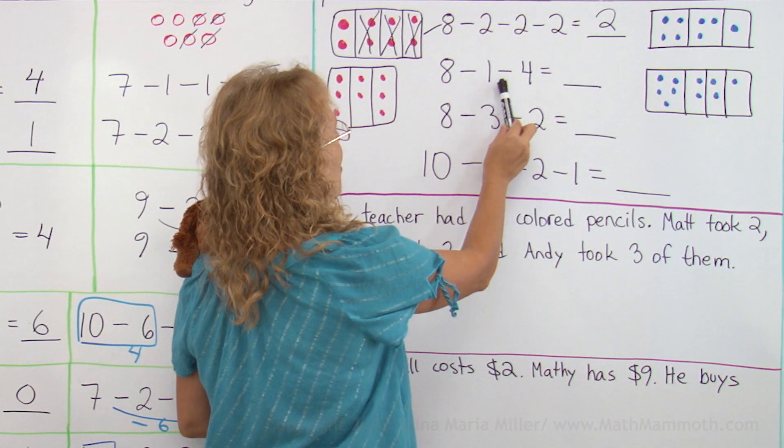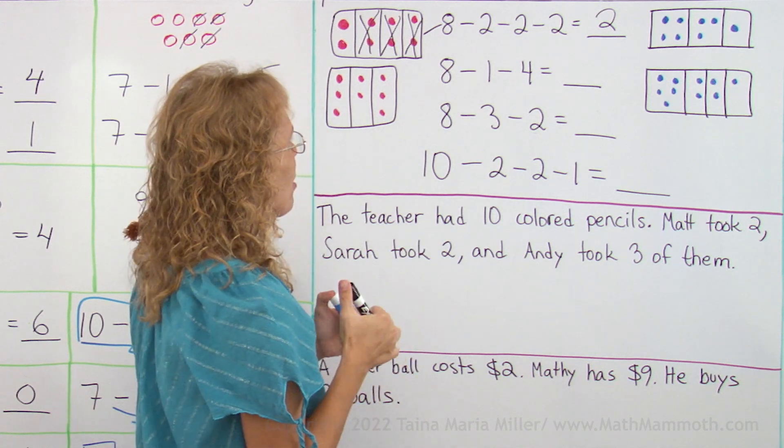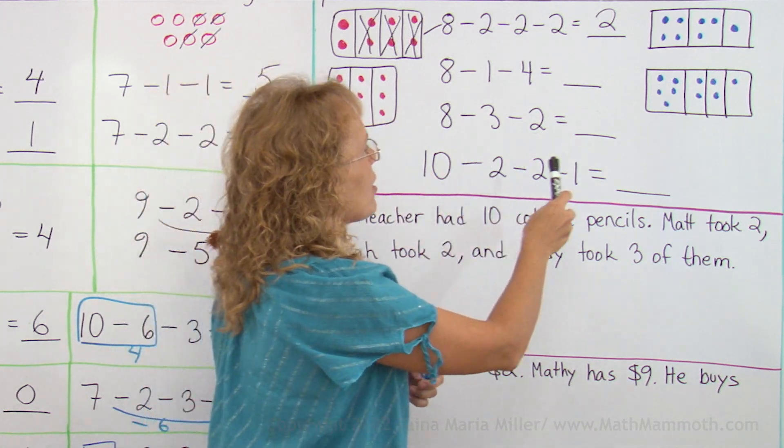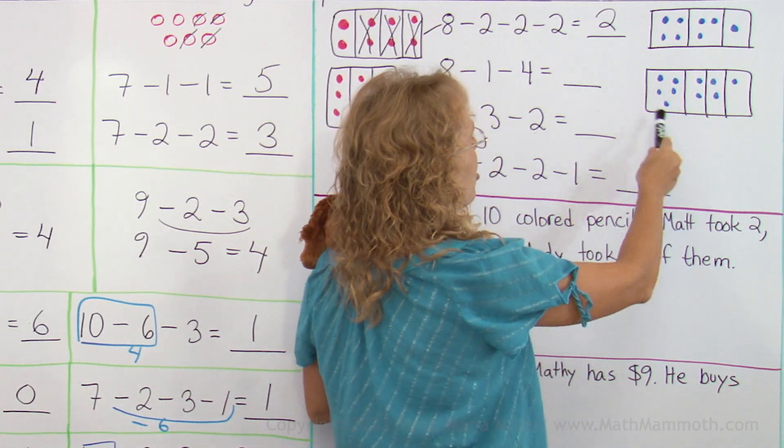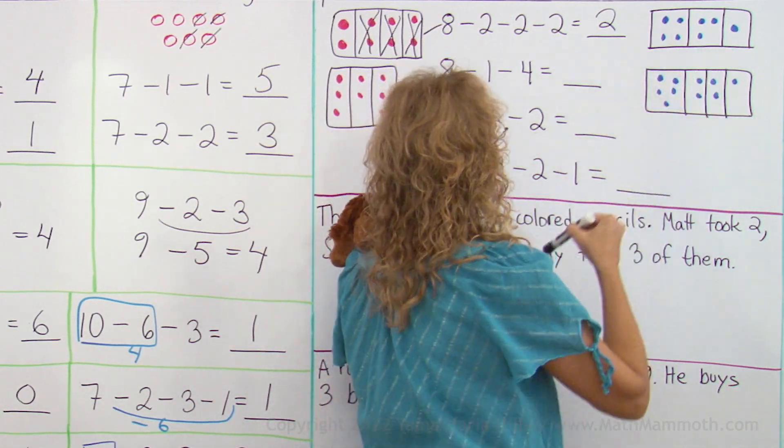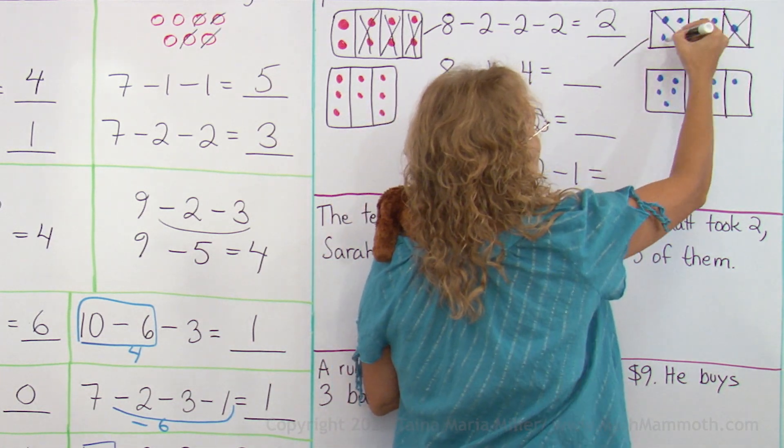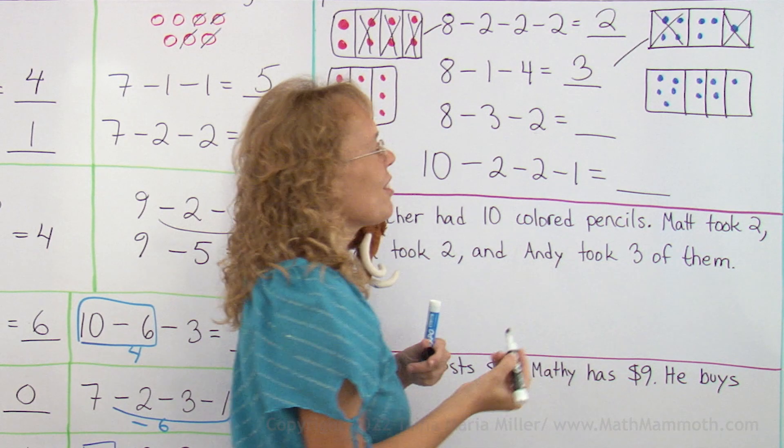Okay, 8 minus 1 minus 4. I'm gonna find something where we have 1 as a group, not here. Here's 1, but the total is not 8. Here's 4 and 1, okay, it matches with this one. You take away 1, take away 4 and 3 are left.